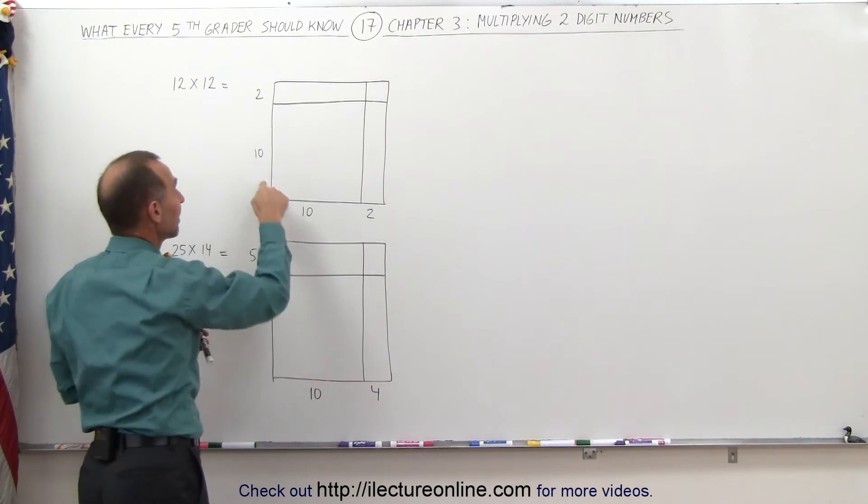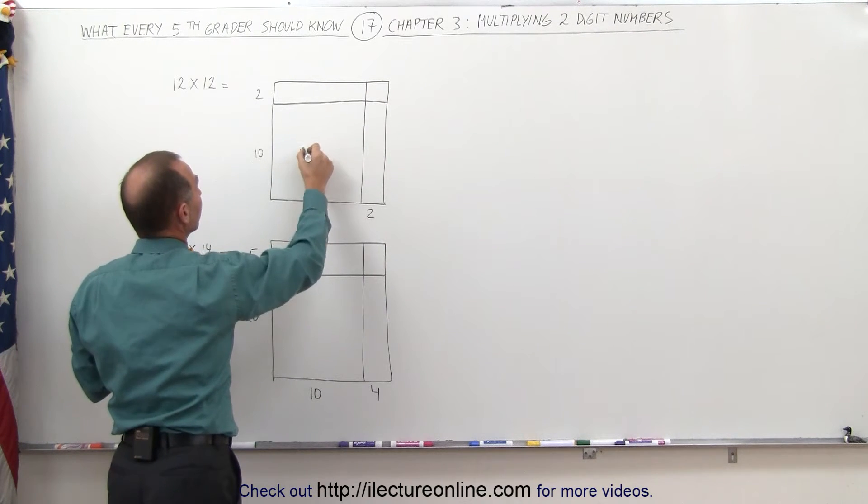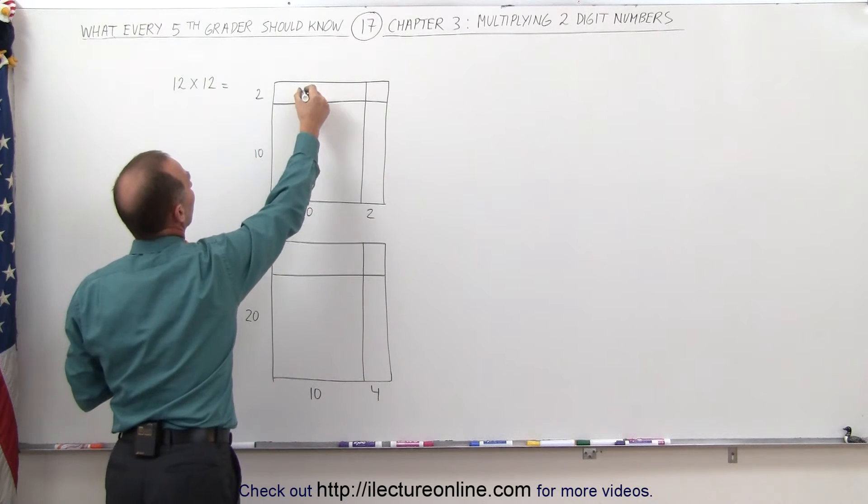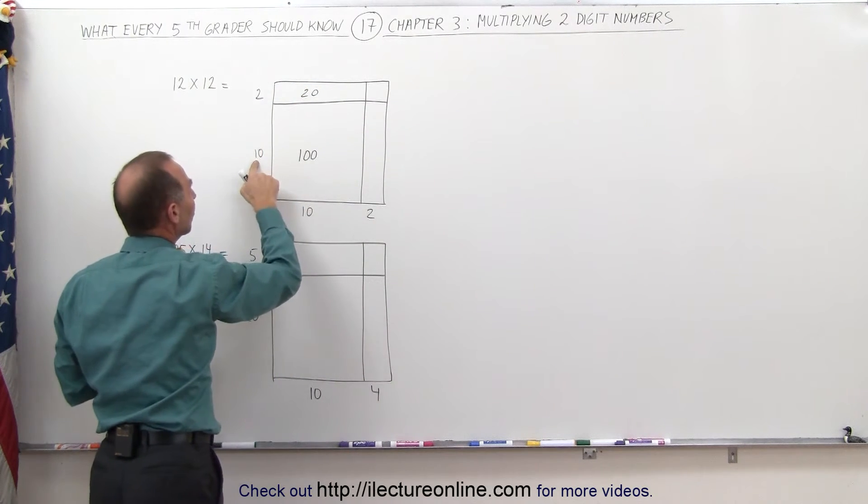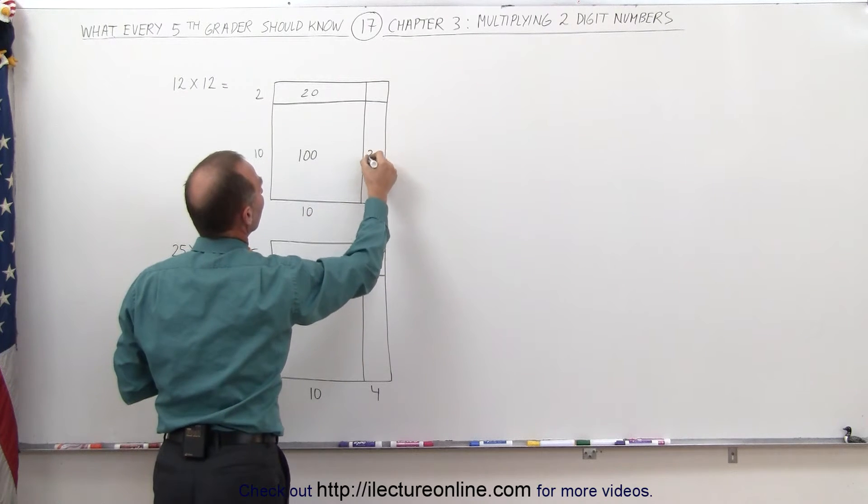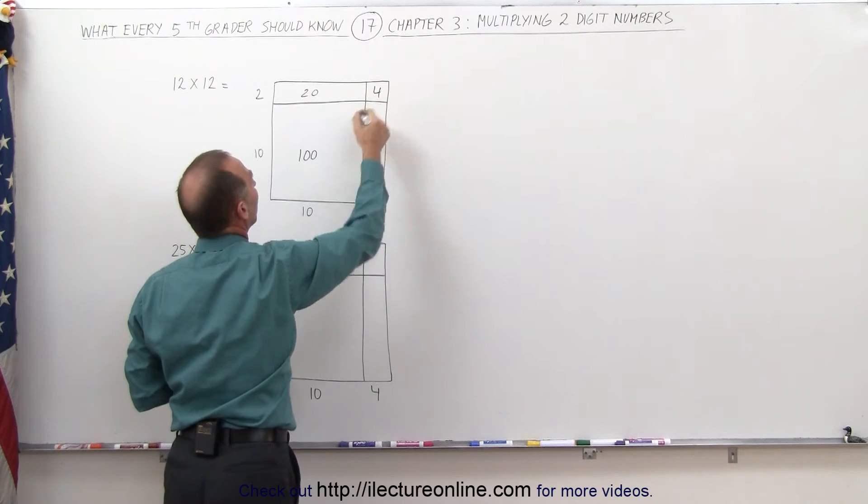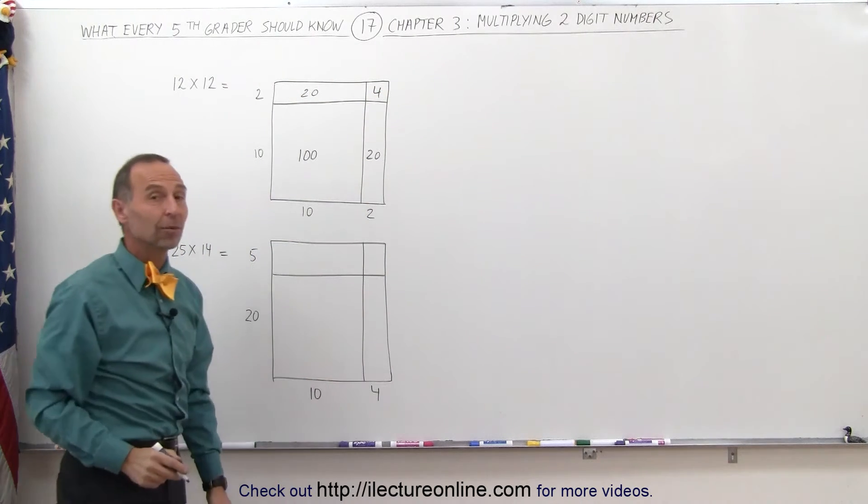In other words, if I multiply 10 times 10, I get 100. If I multiply 10 times 2, I get 20. If I multiply this 10 times this 2, I get 20 over here. And multiply this 2 times this 2, I get the number 4. And all we have to do now is add those numbers together.